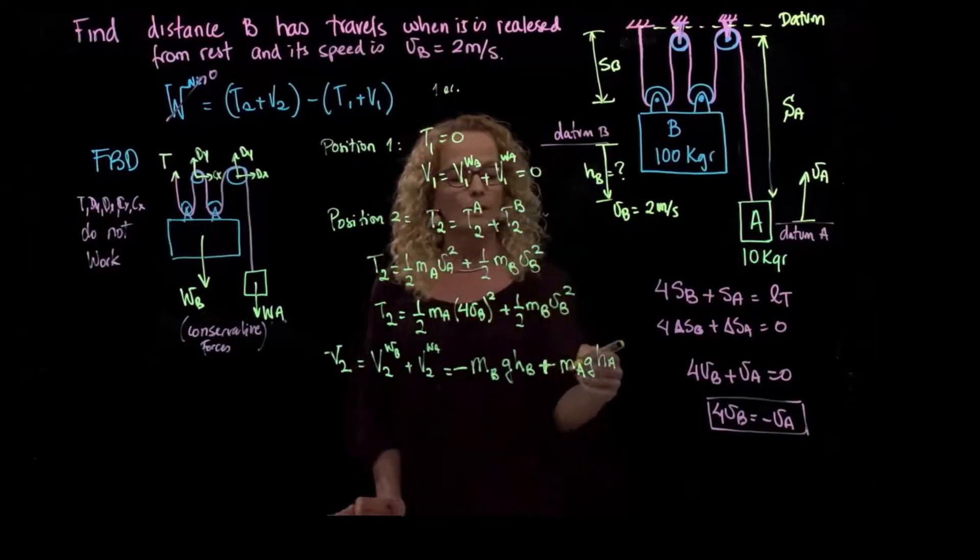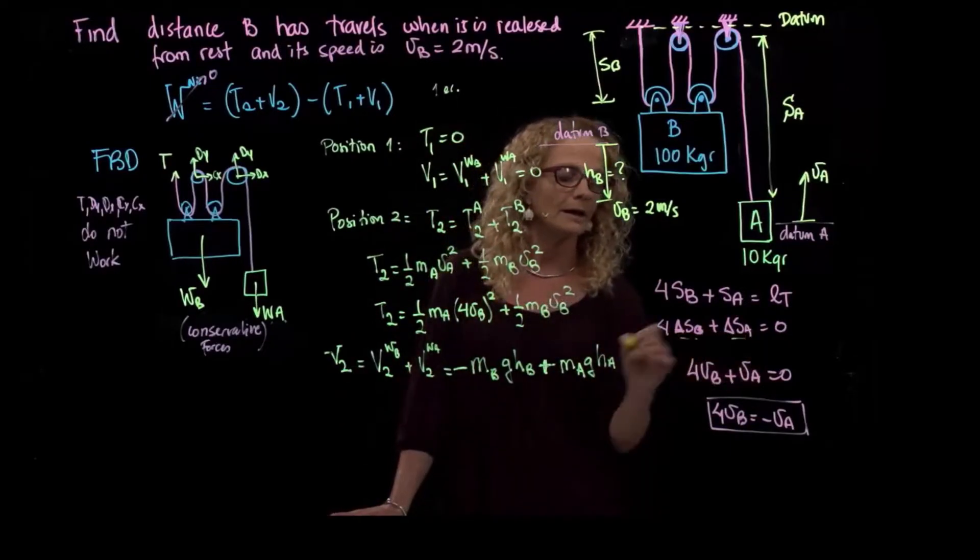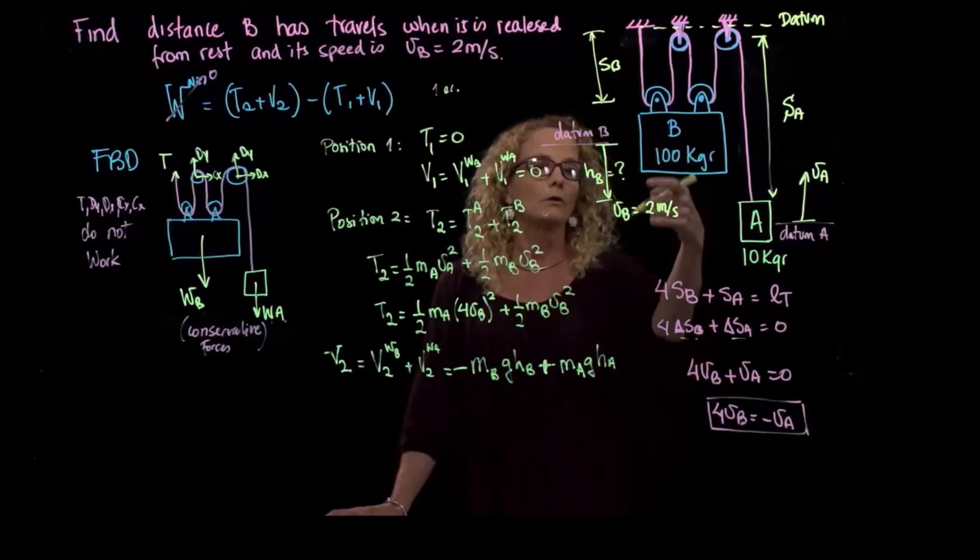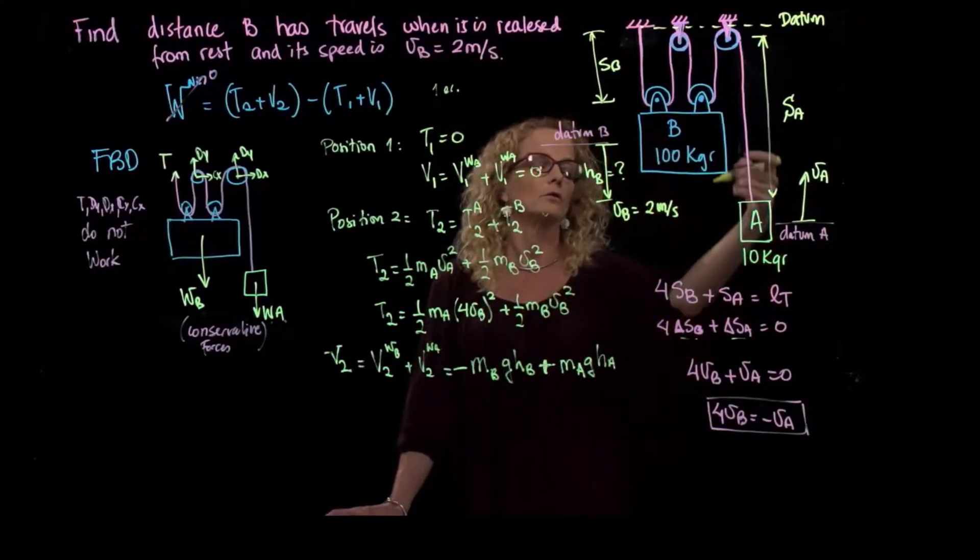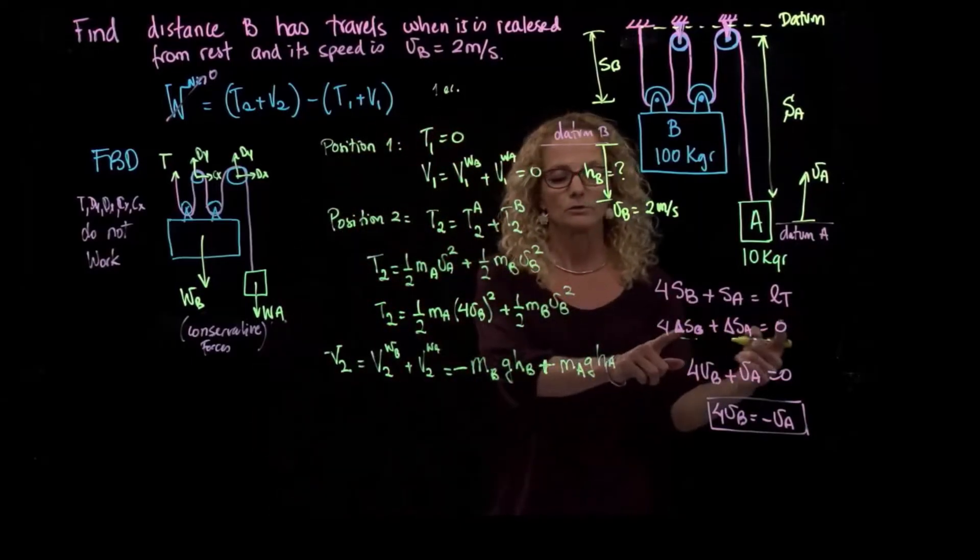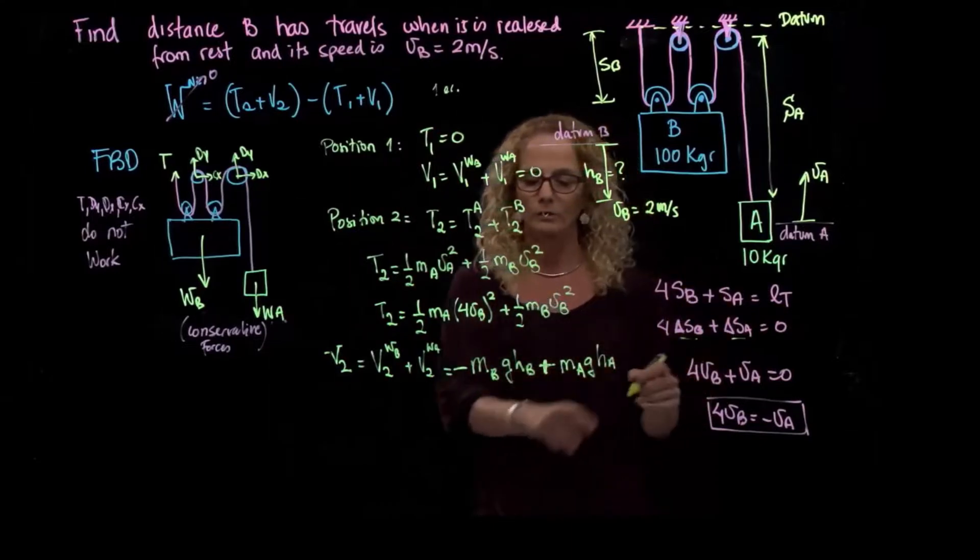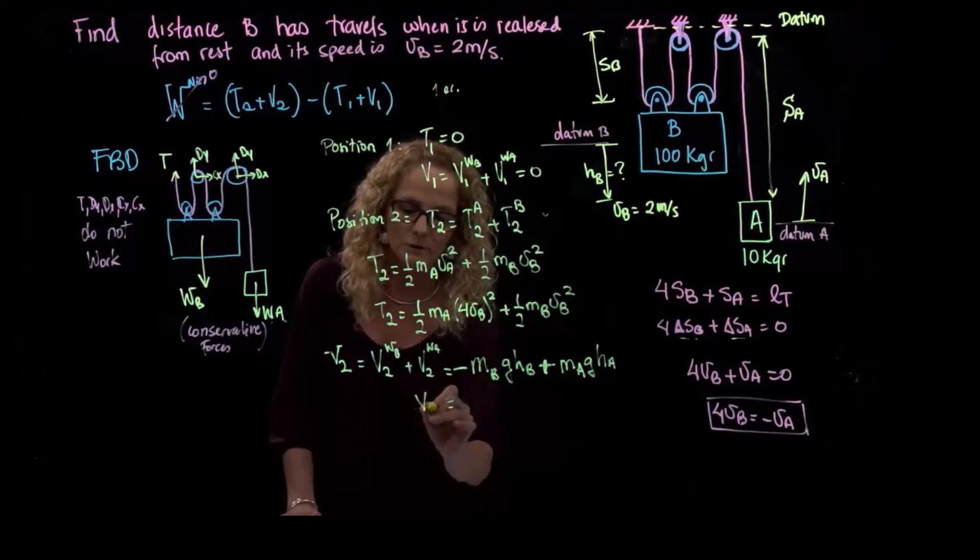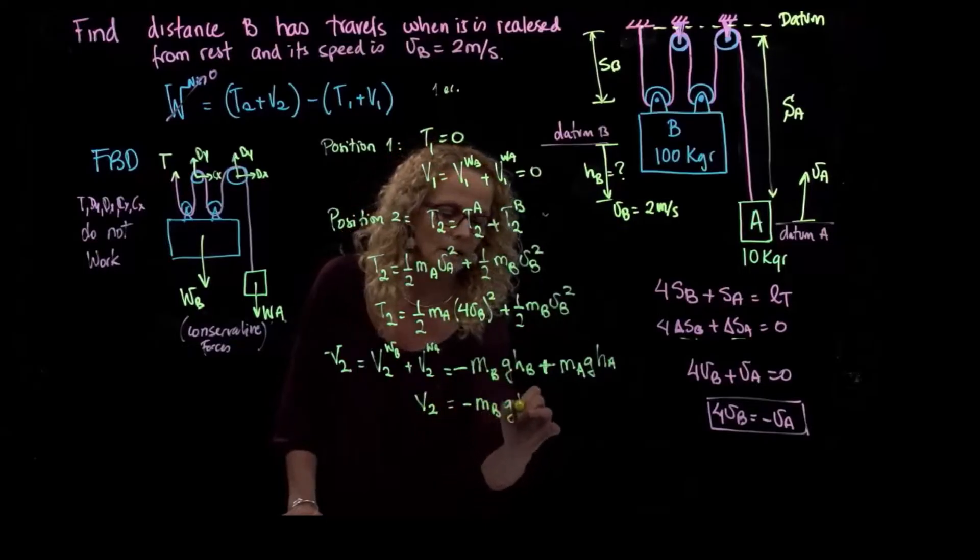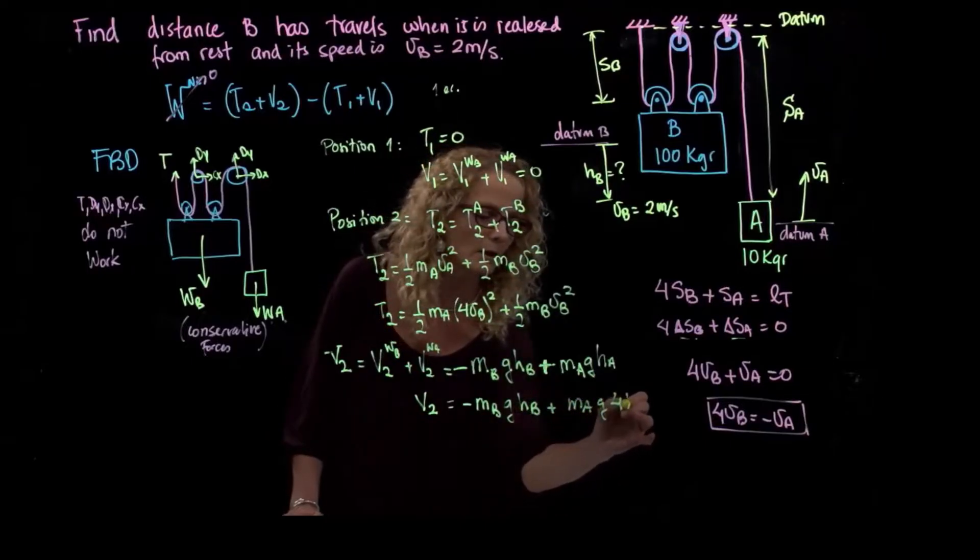Mass A times gravity times height A. The same way that we did for the velocities, we know here they are related. So we see that when this goes down 4 HB, this goes up HB. So that sign could have come also from this equation, as you see, but I took that into consideration already that they are opposite. So I would say that the potential energy in position two is equal to negative mass B times g times HB plus mass A times g times 4 HB.